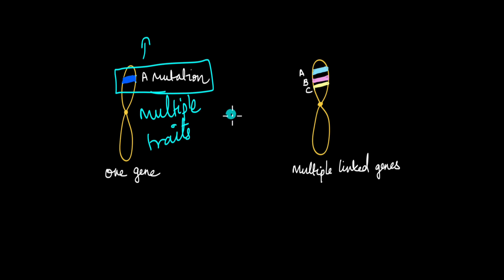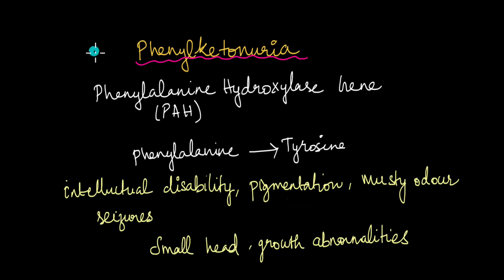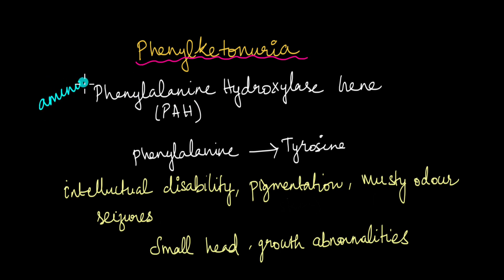Pleiotropy exists a lot in humans and other animals as well, not just in plants. A very common example of pleiotropy in humans is phenylketonuria. Phenylketonuria is a genetic disorder caused by a mutation in the gene that codes for phenylalanine hydroxylase. Phenylalanine is an amino acid that, in the body, needs to be broken down to tyrosine, which can then be metabolized and excreted from the body.